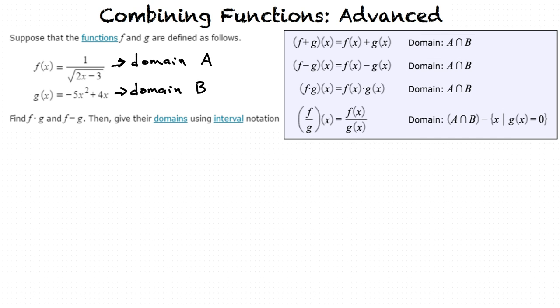So when we have f plus g, f minus g, and f times g, the domain for each of these is the intersection of a and b. When we have f divided by g, it is the intersection of a and b, but we exclude the x value when g of x, or the denominator, equals 0.